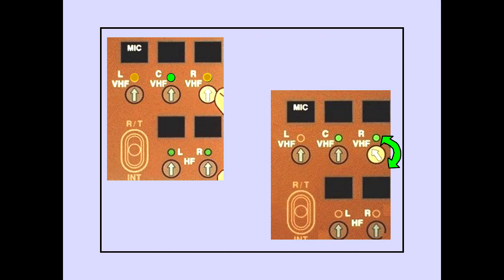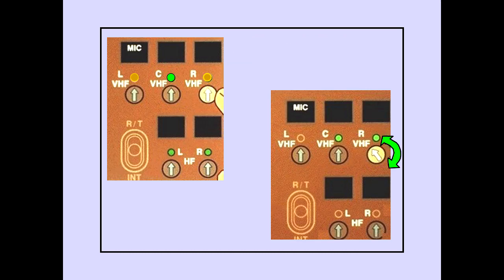When a receiver is manually selected, the receiver selected indicator light illuminates. Any number of receivers can be selected at one time. Once selected, the volume is adjusted by rotating the switch.